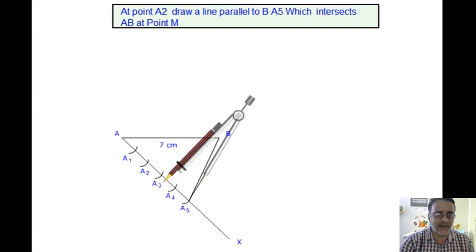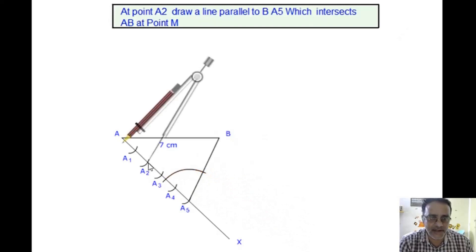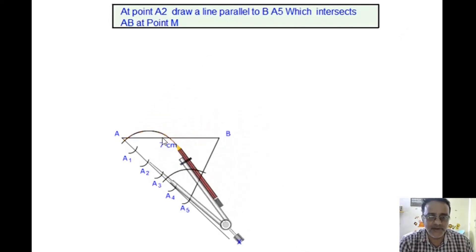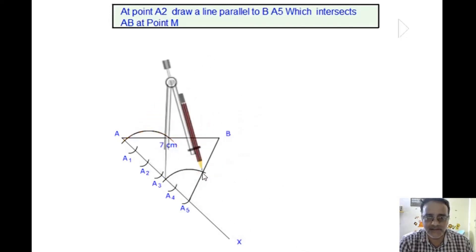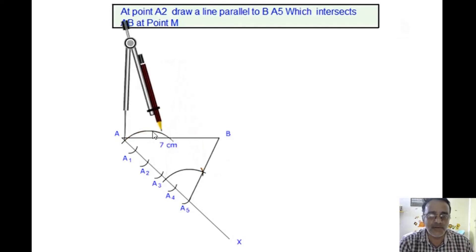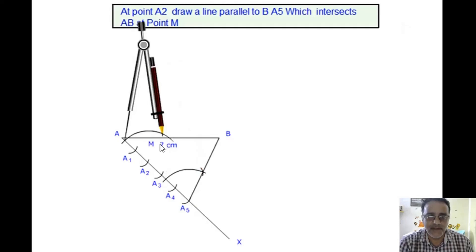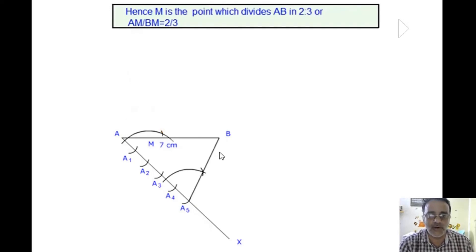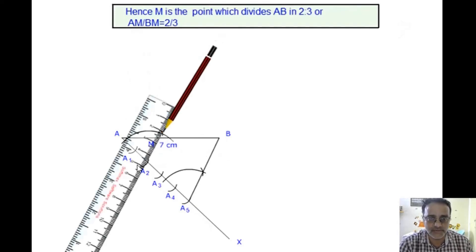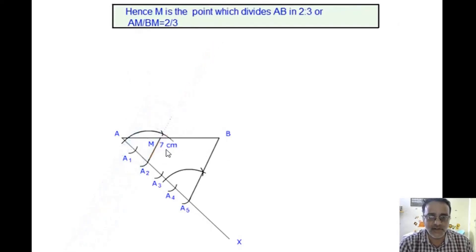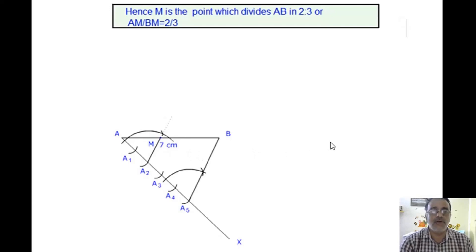Of any convenient radius. Draw an arc and from A2 keep the same radius. Then measure this and cut the same arc from there. After cutting this one, we have to join these two. So when we join these two, we will get a point M. So point M divides AB in the ratio 2 is to 3.